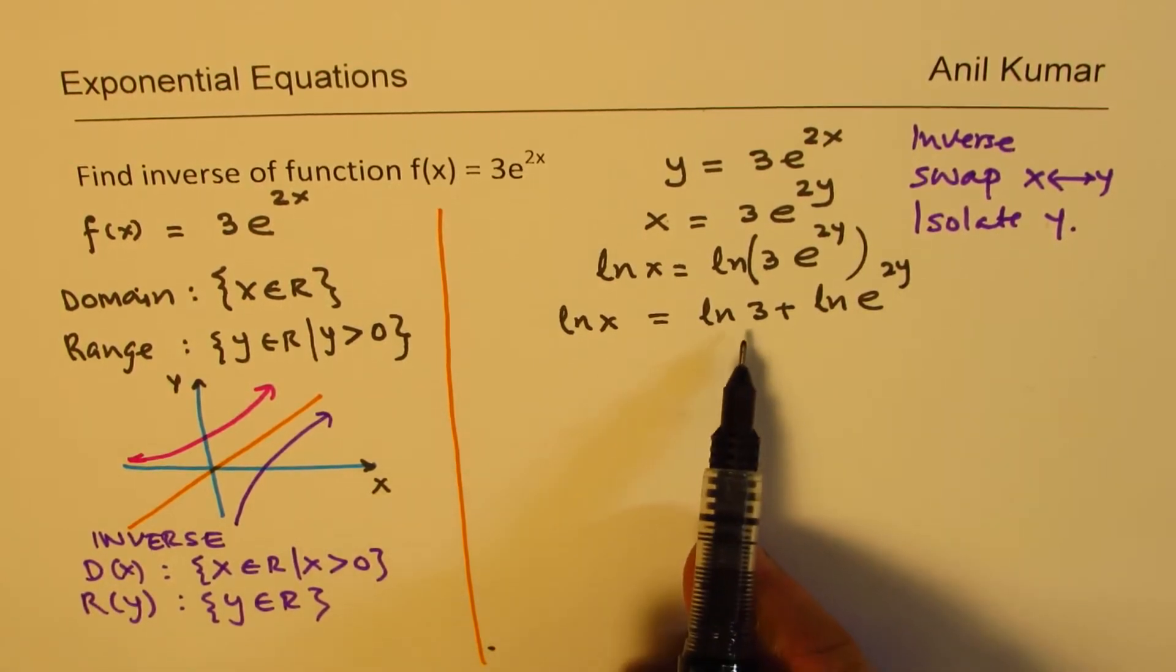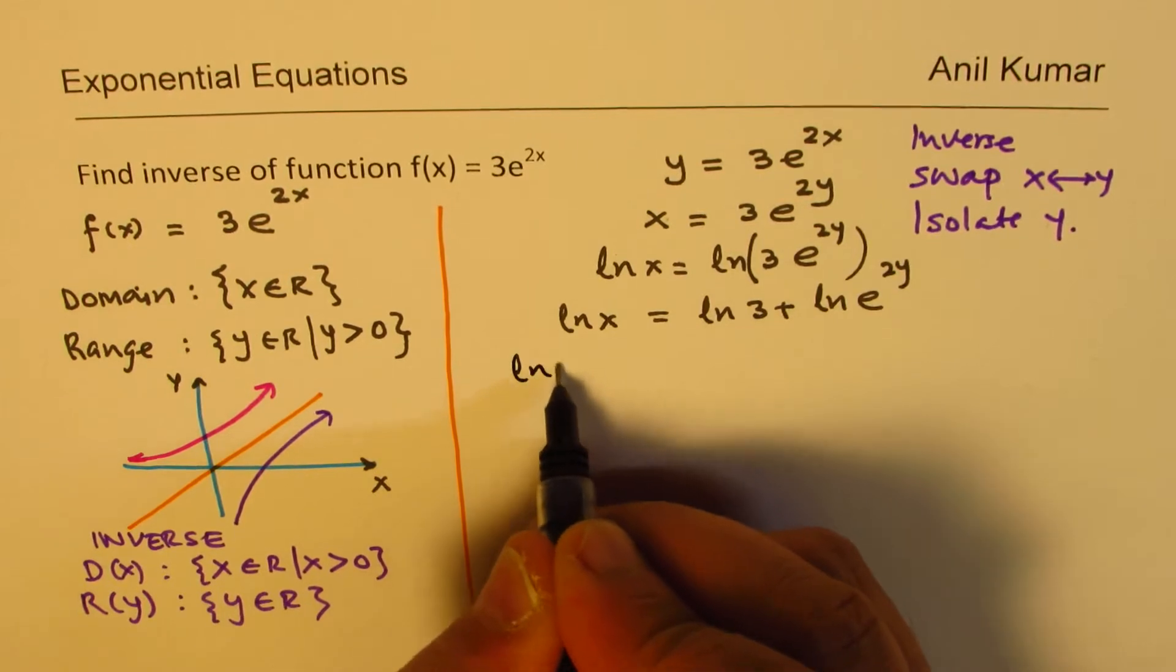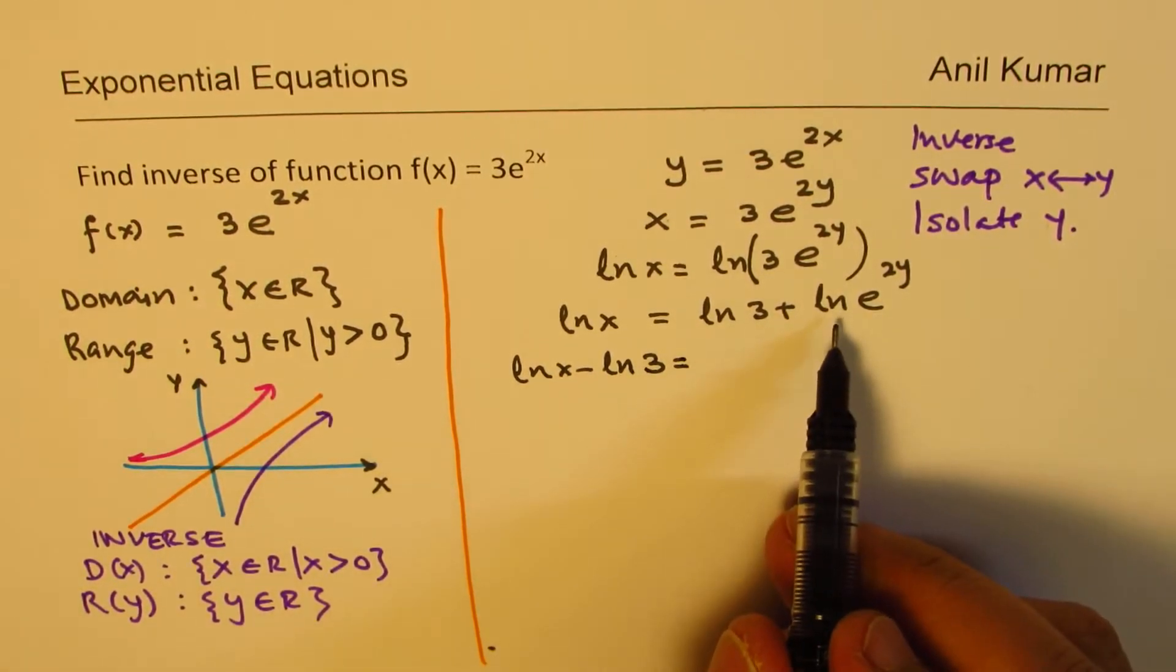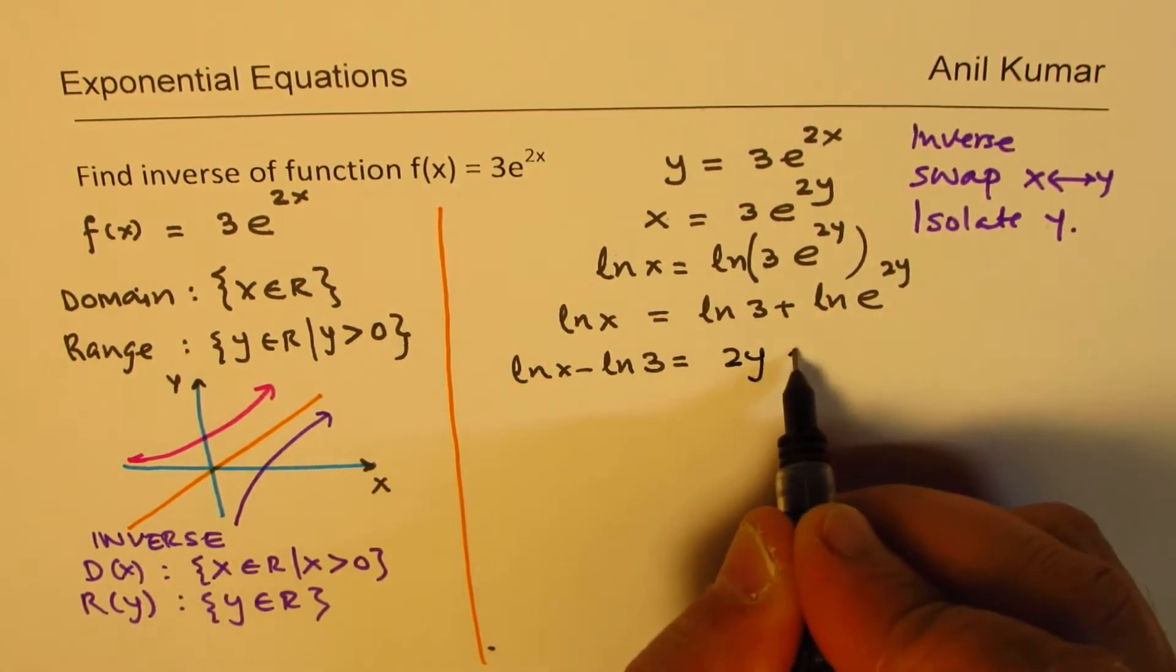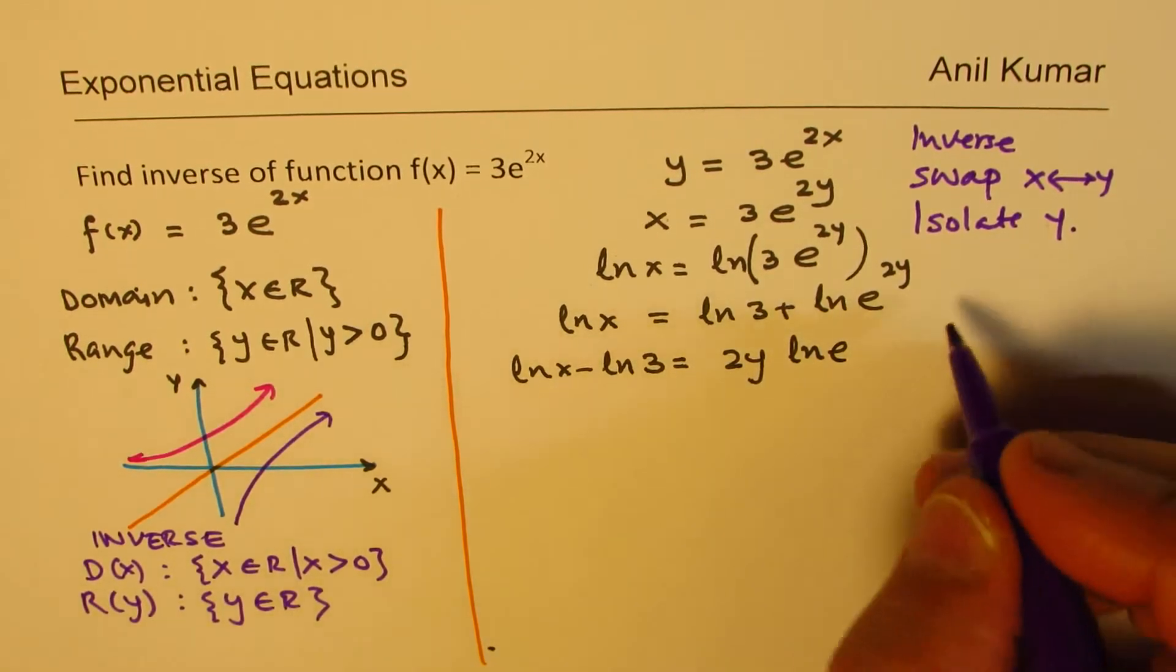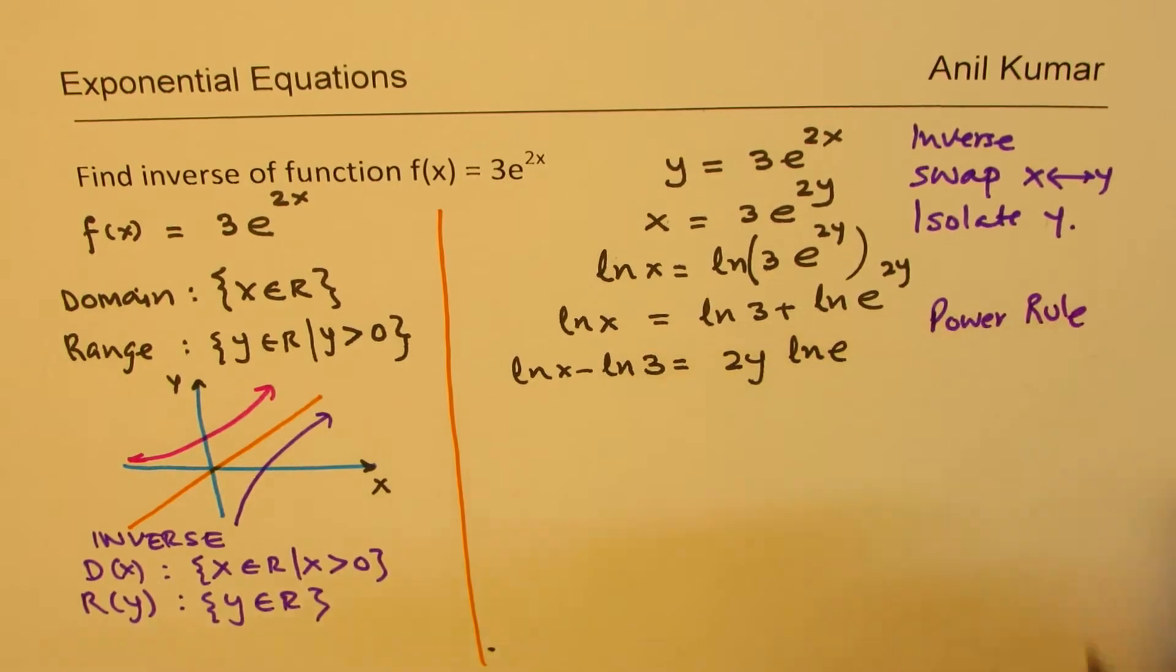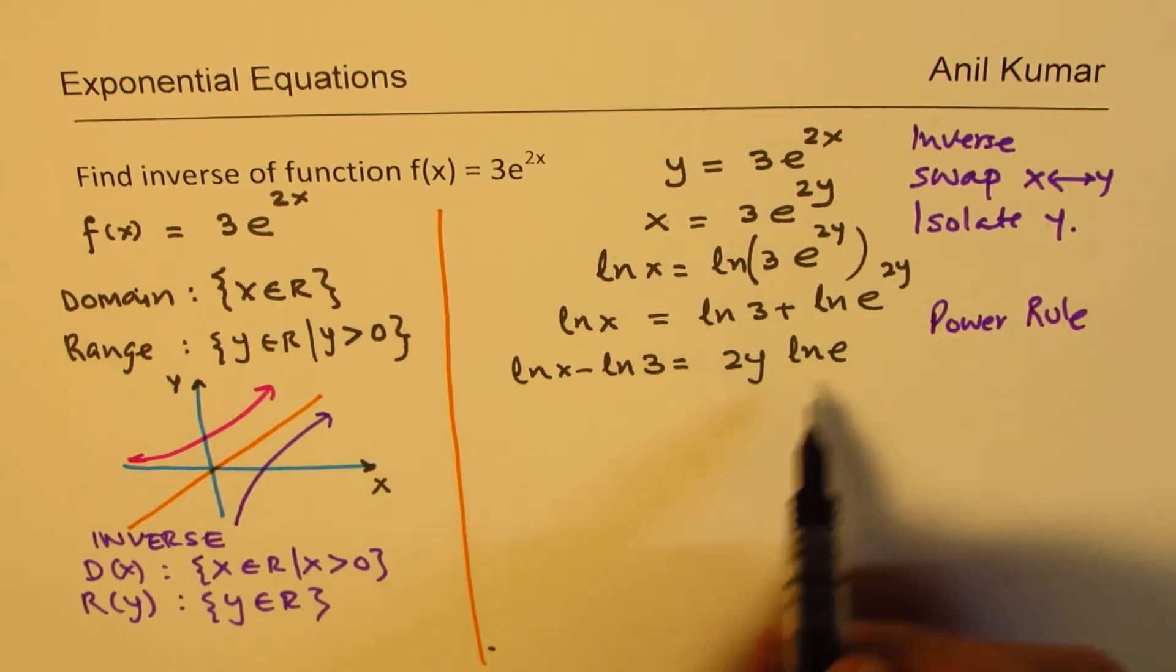ln(3) is basically a constant. Let's take it to the left side. So, we get ln(x) minus ln(3). Here, ln(e to the power of 2y) is basically 2y times ln(e). Now, we know ln(e), they are reciprocal.